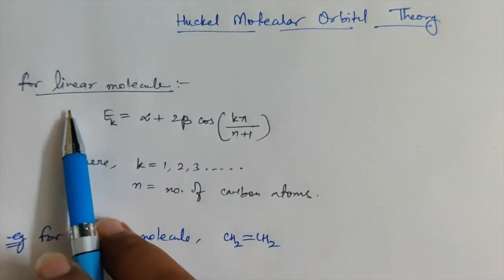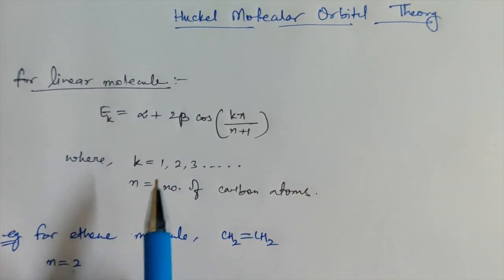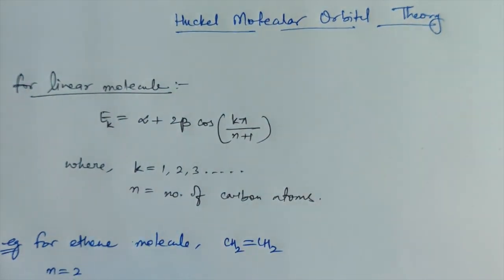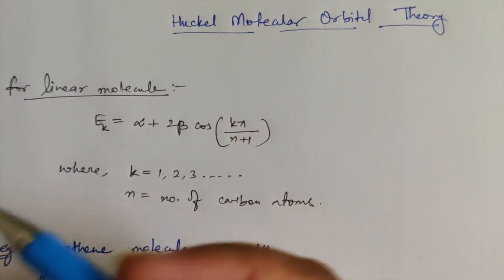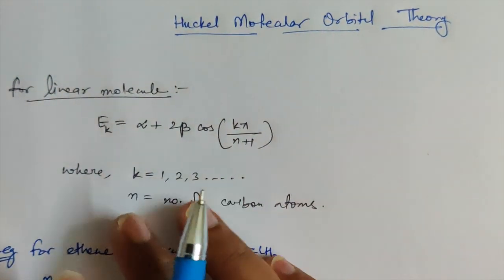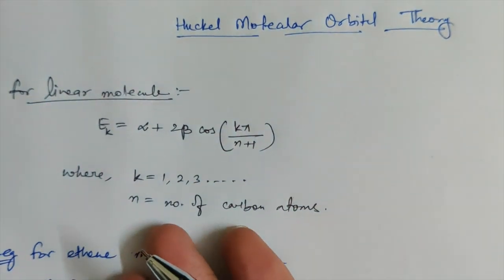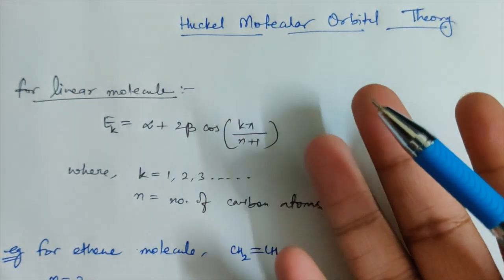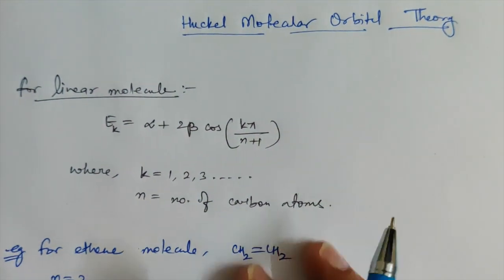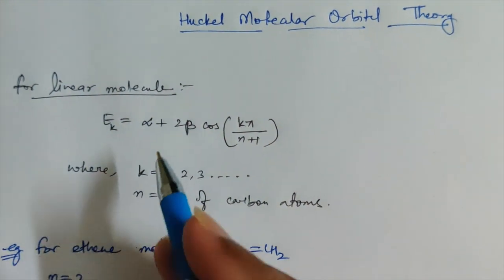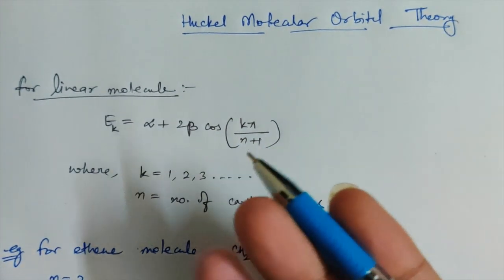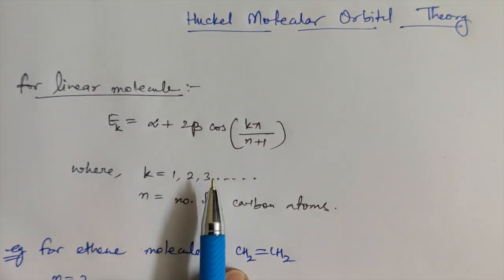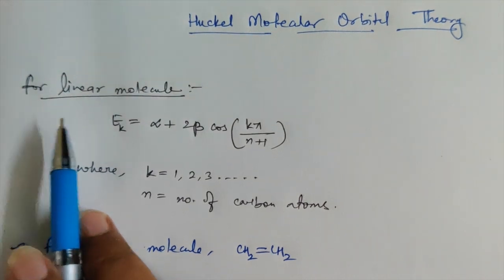First, we'll talk about the linear molecule, or acyclic molecule, like ethene or 1,3-butadiene. All these are conjugated systems, because Hückel Molecular Orbital Theory can only be applied to conjugated systems — be it an allylic system, allylic radical, carbocation, or two-electron or four pi-electron conjugated systems. This first trick is for your linear molecules.